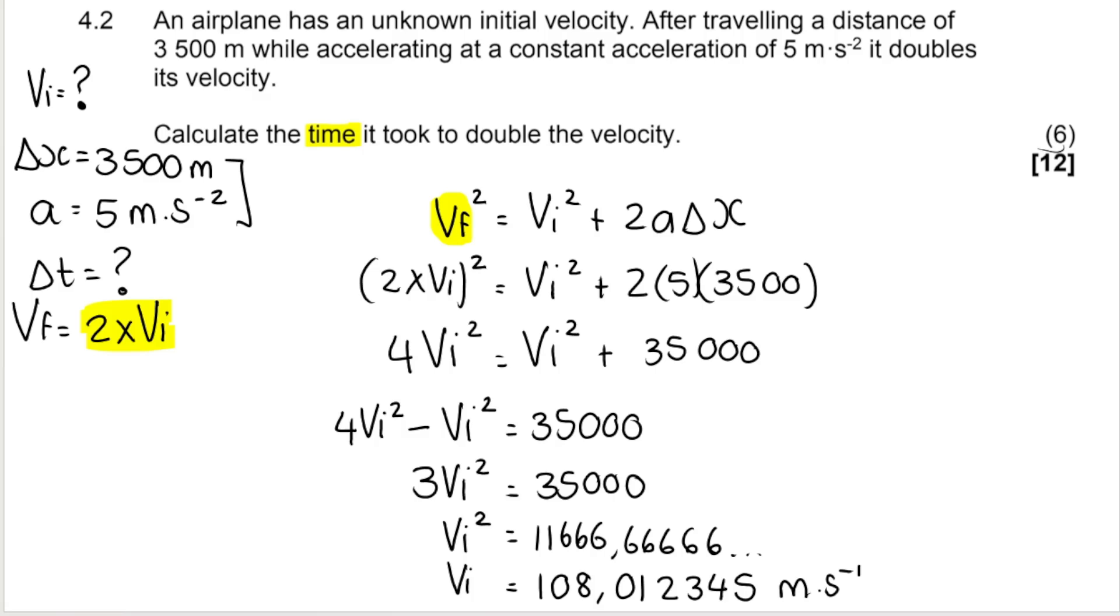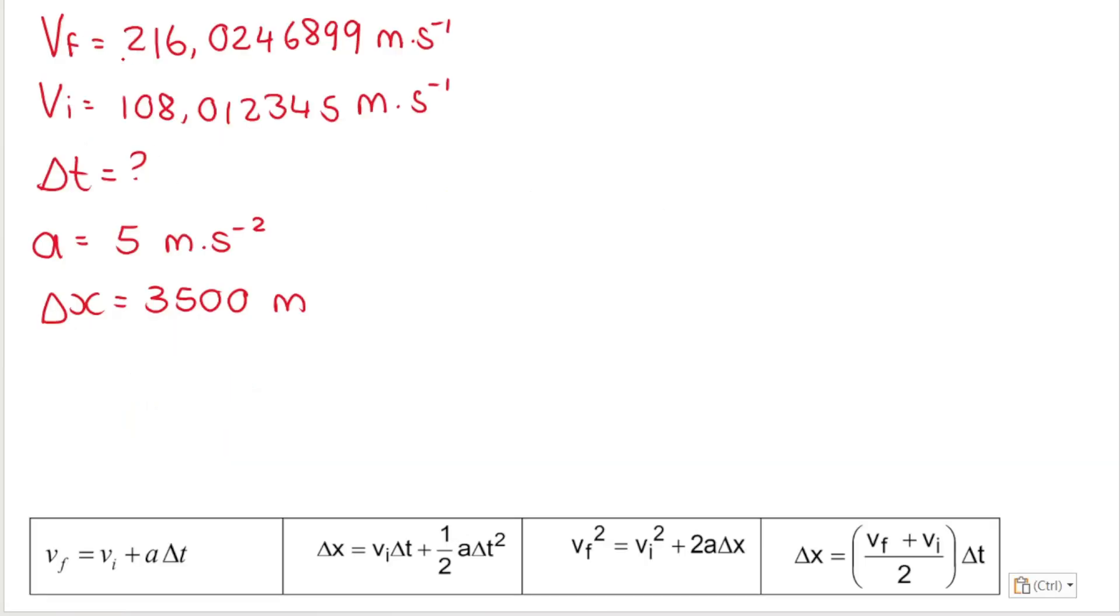Now, what we've just done is we found VI. So what I now know is I know VI. It's that 108 comma whatever. VF is just double that. So VF would be 2 times 108 comma 0123. So VF would technically then be, if I times that by 2, I get 216 comma 0246899. So I know VI, I know VF, I know acceleration, I know displacement, and now I can find time. So there's the list of the variables that I now have. I'm looking for time.